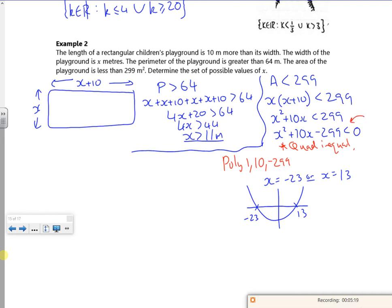That's saying below the x-axis. So this is telling me it's between minus 23 less than x less than 13. But it's a length, isn't it? So I know that it needs to be positive. So I need a positive length.